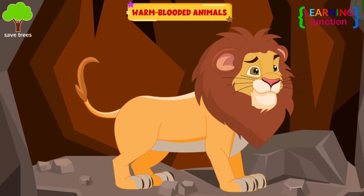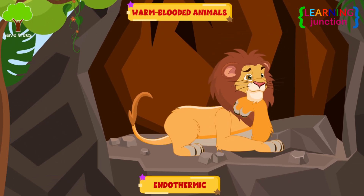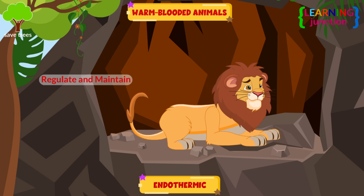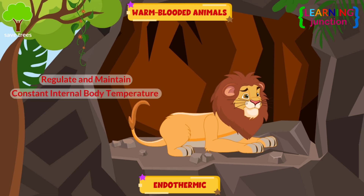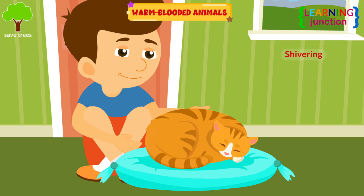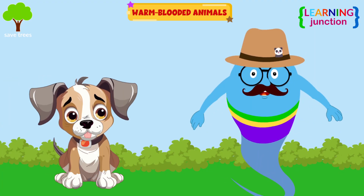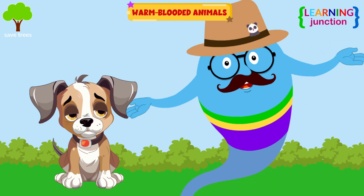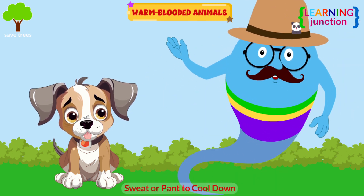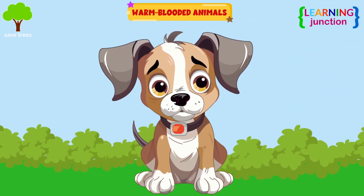Warm-blooded animals, also known as endothermic, are defined as animals that can regulate and maintain constant internal body temperature. This cat is shivering and making small movements to generate warmth. On the other side, some animals may sweat or pant to cool down. They can survive in any temperature range, as they can adapt to it easily.